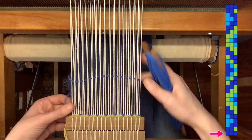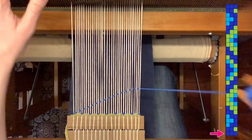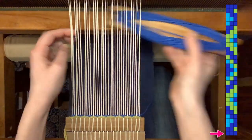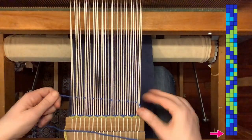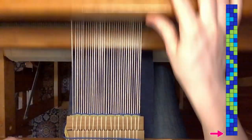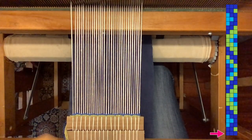Okay, now I'll continue to put my dark blue in sheds two and three. Now that's one cycle through, and I'll repeat those three picks two more times.